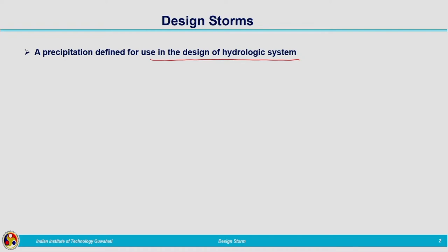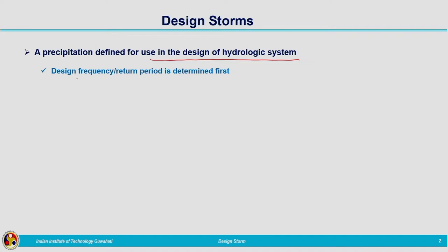The design storm can be based on historic data from a particular station or from stations which are meteorologically similar. Sometimes data is not available for a particular catchment where we are expecting a heavy storm or maximum flood. In such cases we can make use of storms from neighboring catchments which are meteorologically similar to the catchment under consideration.